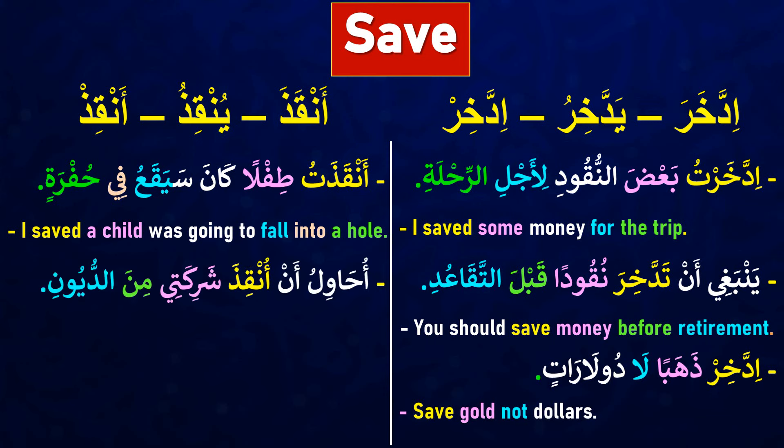Next sentence: أحاول أن أنقذ شركتي من الديون — it means 'I am trying to save my company from debts.' أحاول أن — I am trying to, أنقذ شركتي — save my company, من الديون — from debts. The last sentence for this verb is going to be your homework — please look at it.